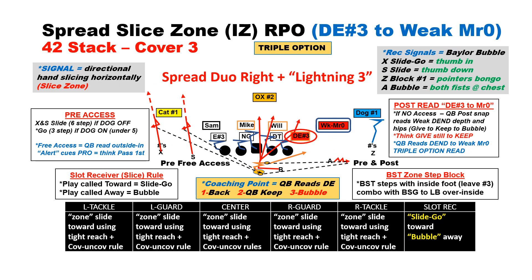If you do have a dual-threat quarterback, then we simply do our slice inside zone. We're going to go to the play side and run our slide and go for free access. If we have it, we take it. If not, then we run slice zone — we'll read the defensive end for a give, then quarterback keep to bubble with the A receiver.